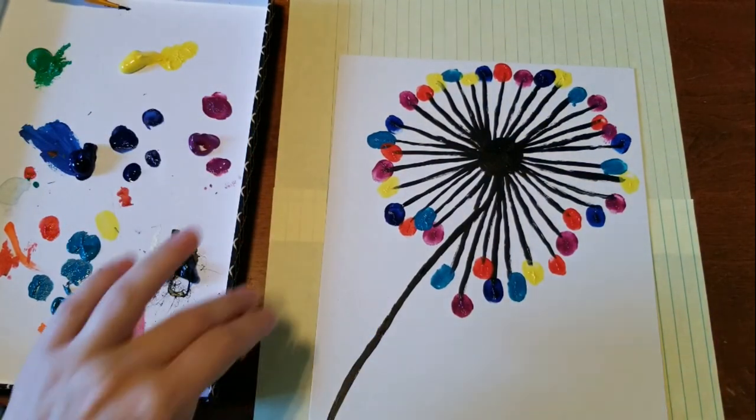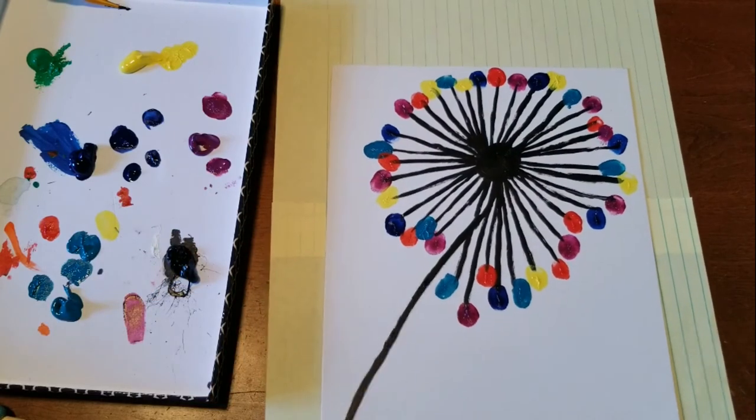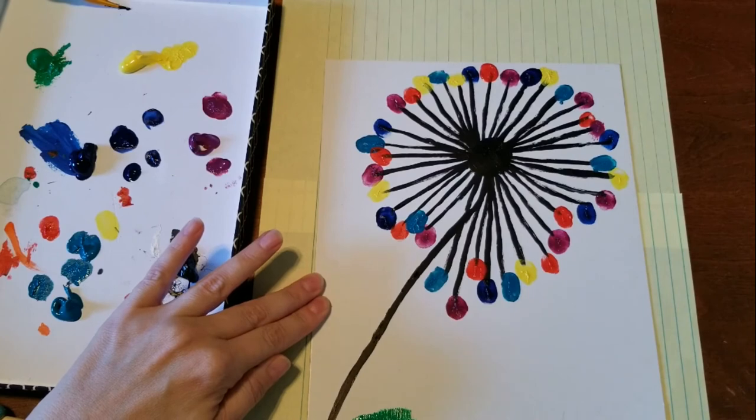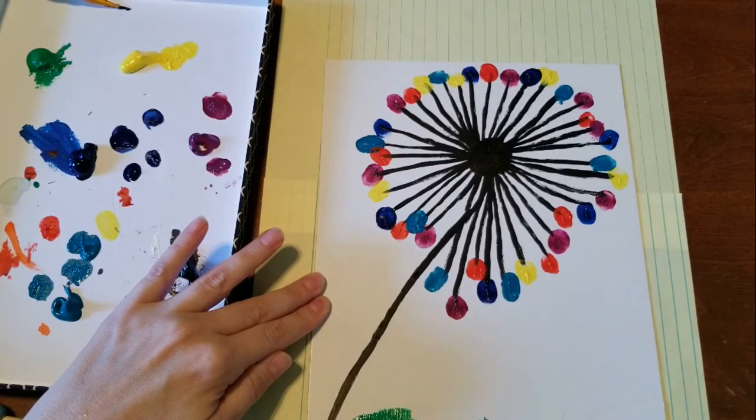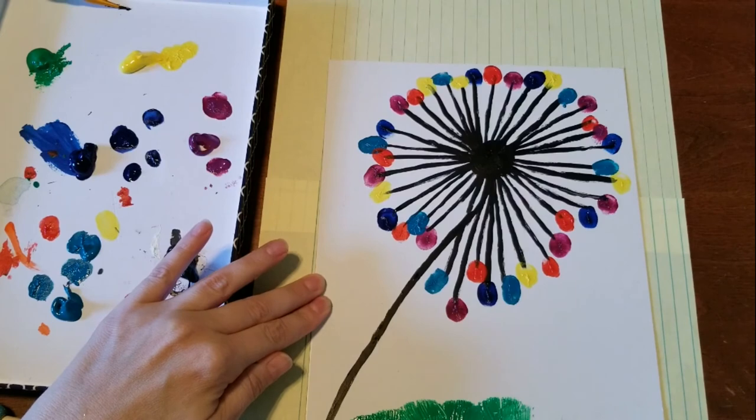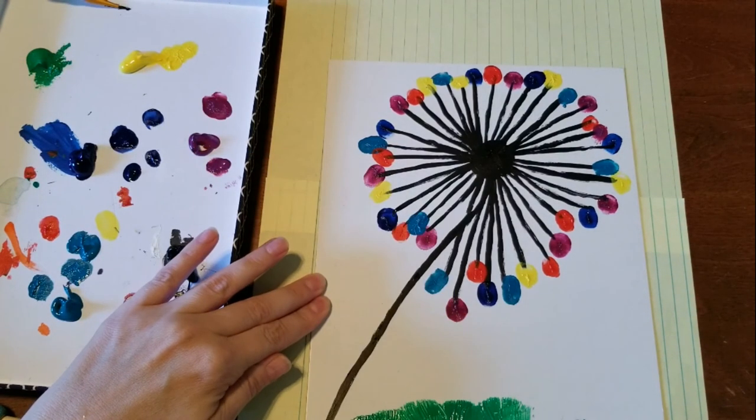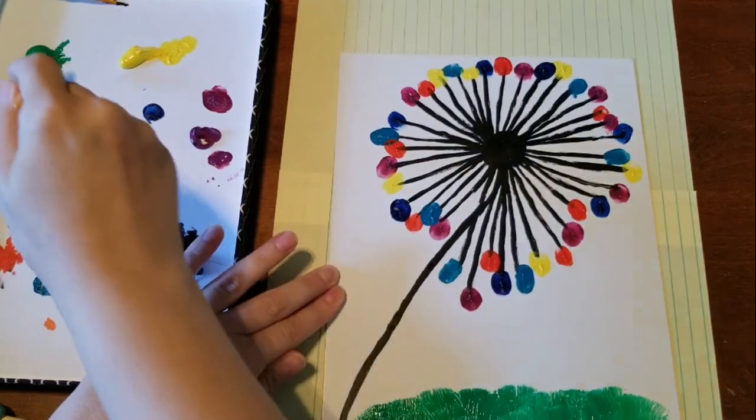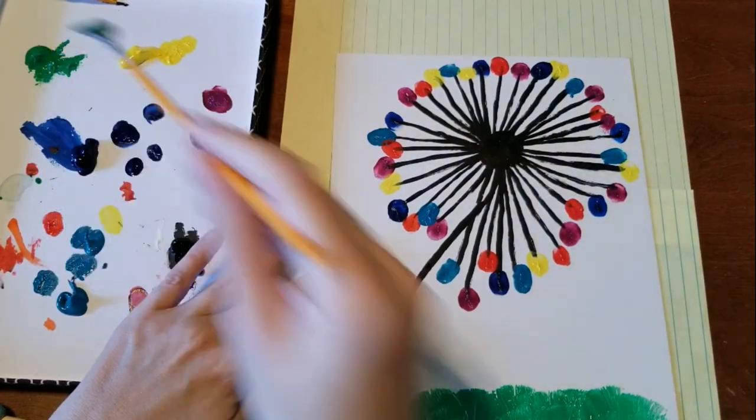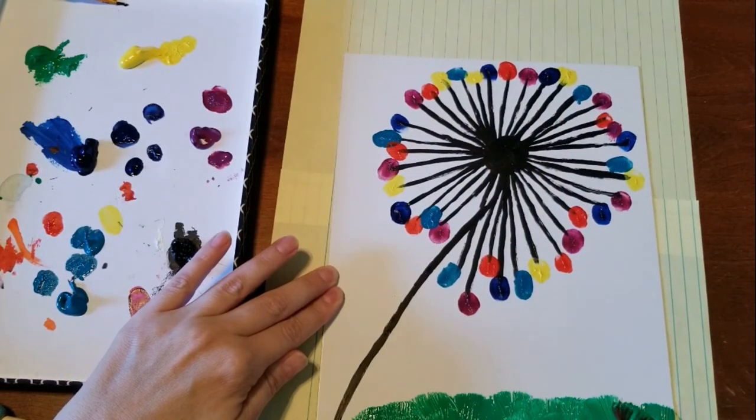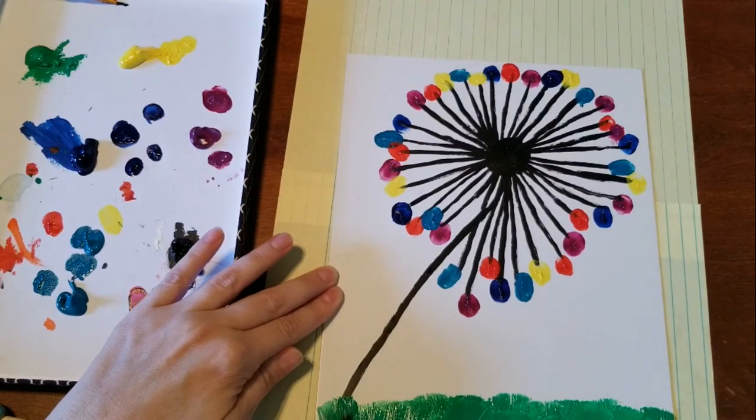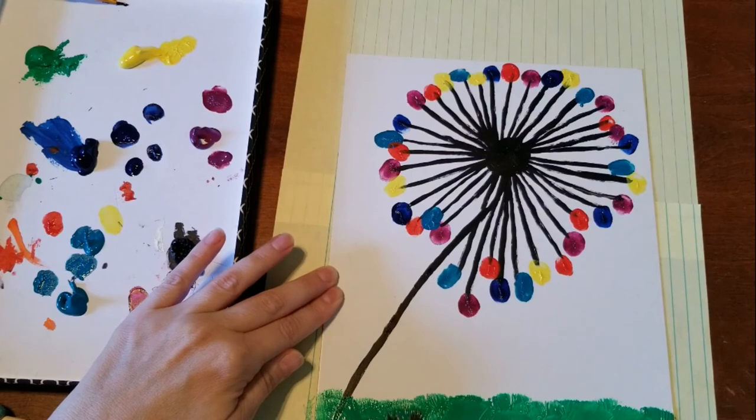So take a little bit of my green paint, and I'm just going to do a little grass down here at the bottom. And you can use your fingers if you want. I just use my fan brush because it kind of looks like blades of grass, which I think is pretty cool, but fingers work just as well. So you can have your grass right here.